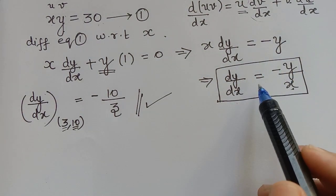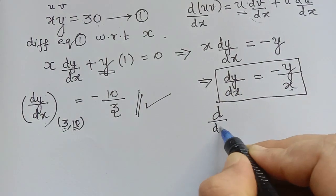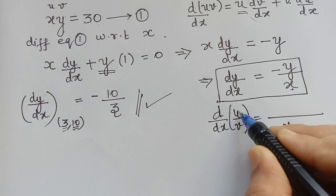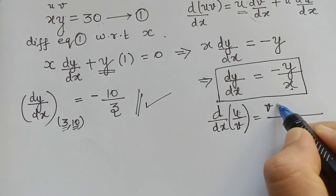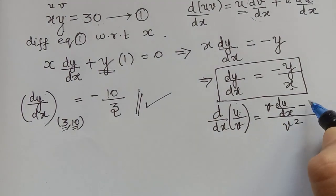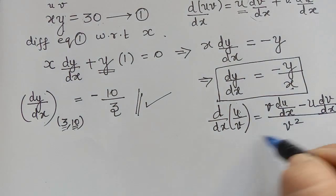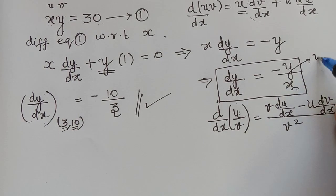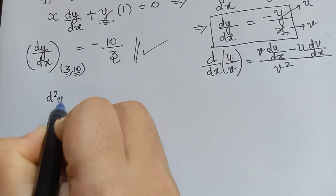Next, we find d²y/dx² by differentiating dy/dx = −y/x. Since this is in the form u/v, we use the quotient rule: d/dx(u/v) = (v · du/dx − u · dv/dx) / v². Here u = y and v = x.